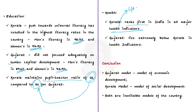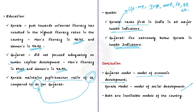In health, Kerala ranks first in India in all major health indicators such as life expectancy at birth, infant mortality rate, maternal mortality rate, fertility rate, and birth rate. Gujarat lies extremely below Kerala in health indicators, though slightly above the national average. We can conclude that the Gujarat model is a model of economic development while the Kerala model is a model of social development. Both are inevitable models for our country, as each has advantages in different sectors.